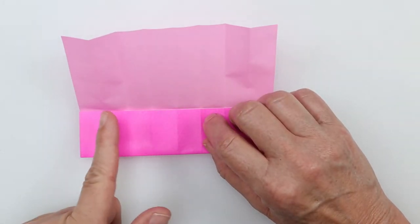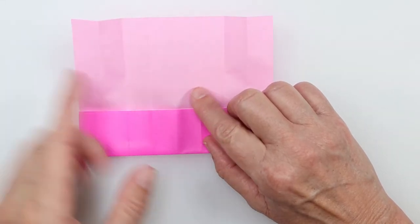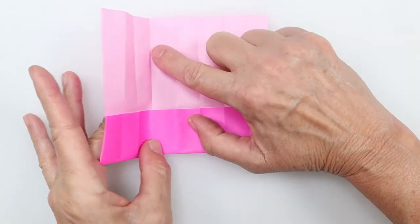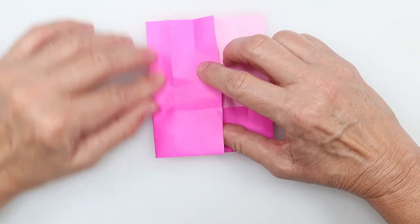Now I'm going to count my creases, one, two, three, my third crease here. On my third crease, I'm going to fold it towards the center, and just kind of reinforce that crease.